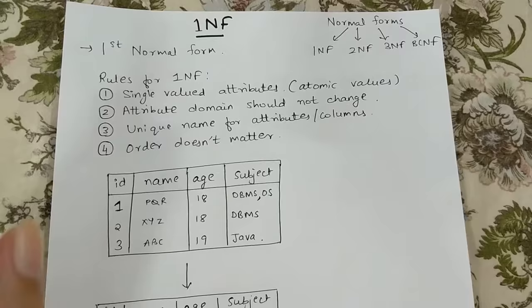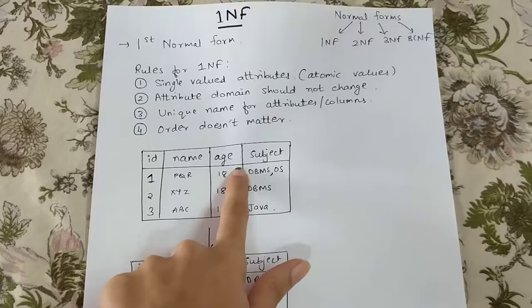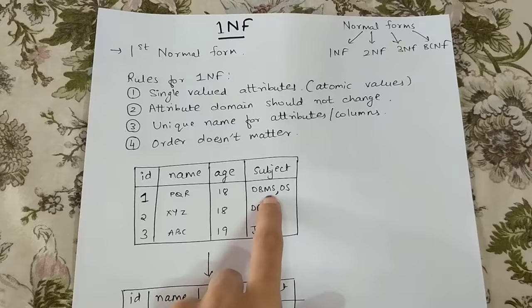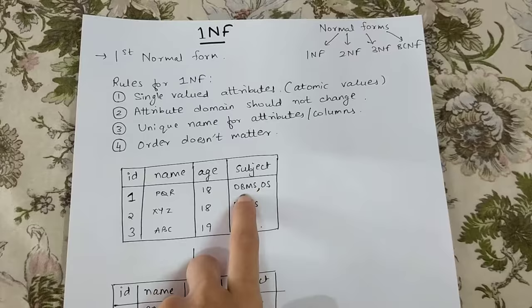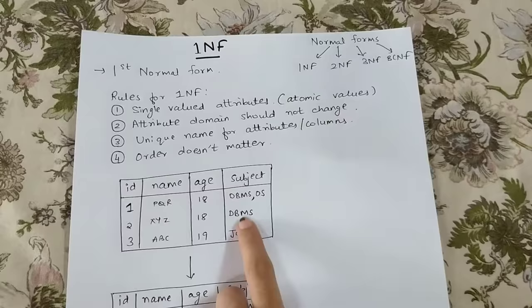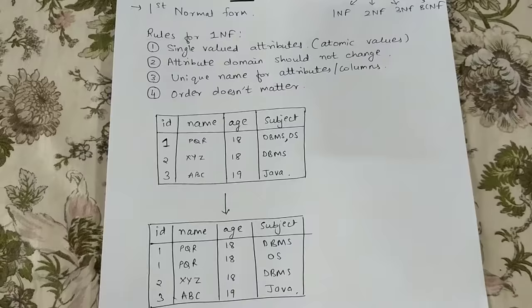This table has columns ID, name, age, and subject. This is not in 1NF form. As you can see, this cell is having two values — ID 1, name is PQR, age is 18, and ID 1 has opted for two subjects: DBMS and OS. So this one cell is having two values, it is not having an atomic value. To convert this into 1NF, we will have to insert values like this — the same value will be repeated.